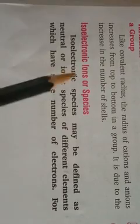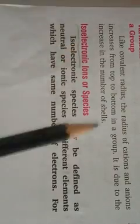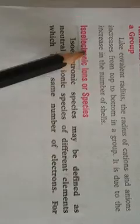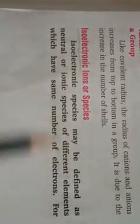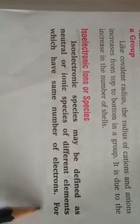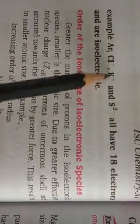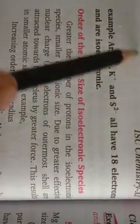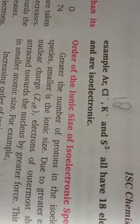The next heading is isoelectronic ions or species. 'Iso' means same, so isoelectronic species are units having a similar number of electrons. They may be defined as neutral or ionic species of different elements which have the same number of electrons. For example, argon, chloride ion, potassium ion, and sulfide ion all have 18 electrons, making them isoelectronic species.